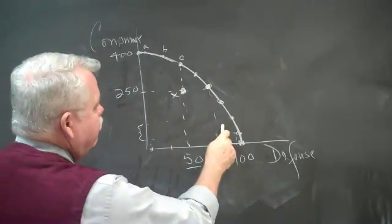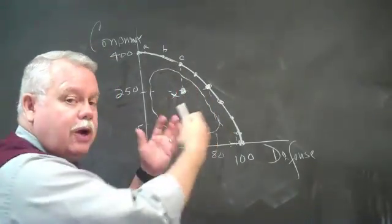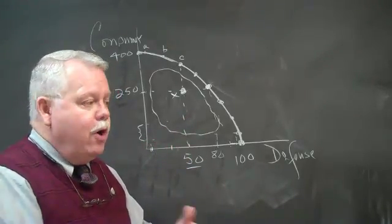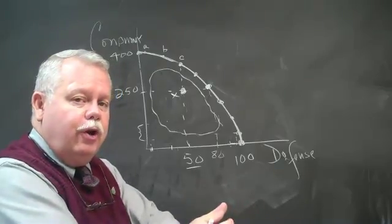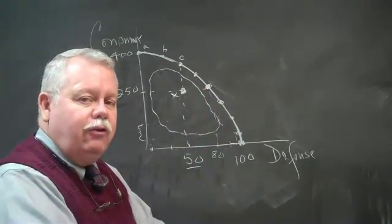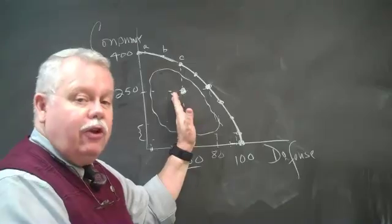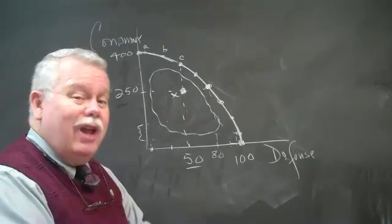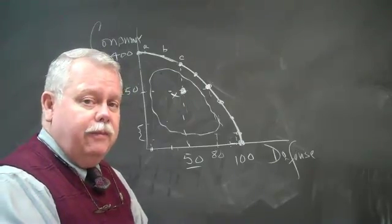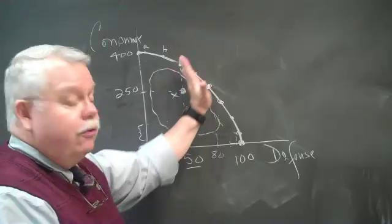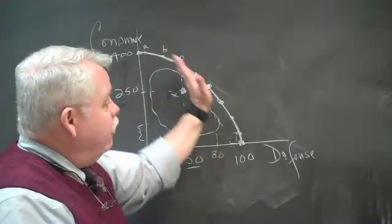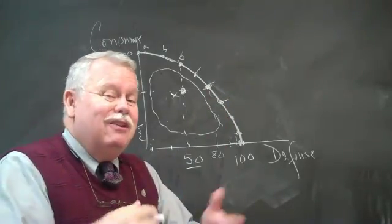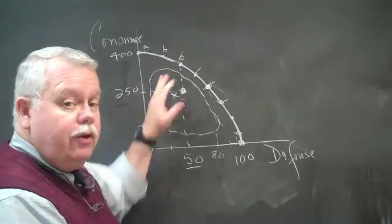And so our general argument first is that anytime you're inside the production possibilities frontier, you are inefficient. You are not using all of your resources as efficiently as you could. In a macroeconomic sense, that would mean that your economy is suffering from some high unemployment, some unused labor resources, folks who just don't have a job. So the object at first then is to move out to the production possibilities frontier at whatever point you subjectively think is the best place to be, the best combination of these goods.